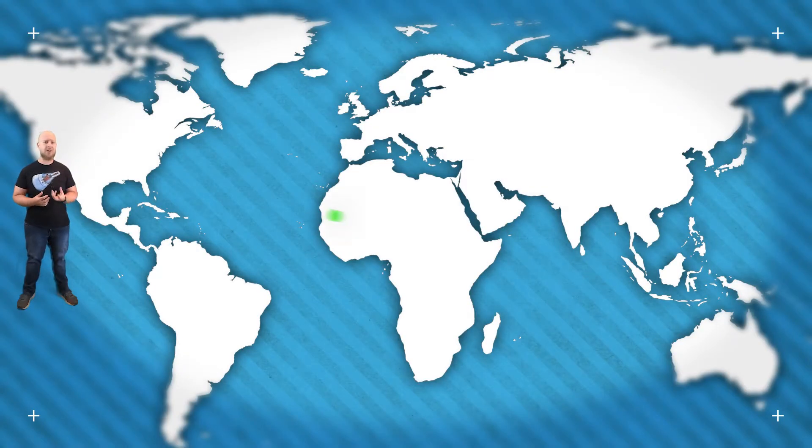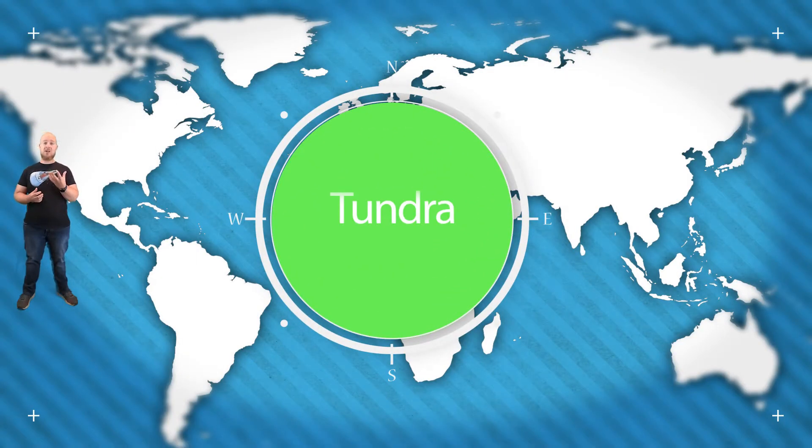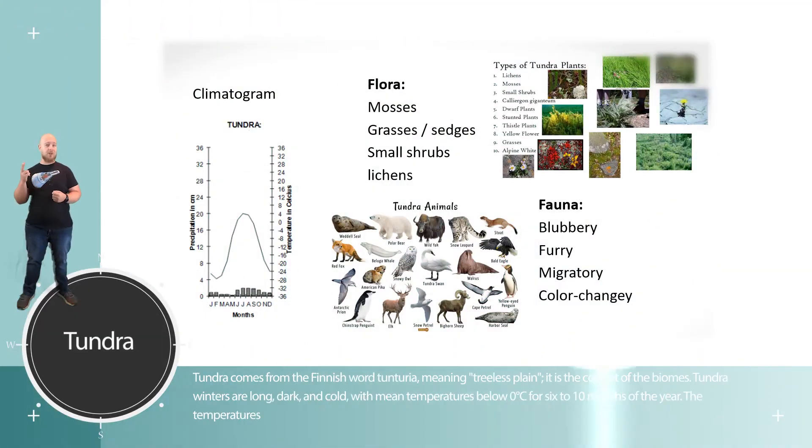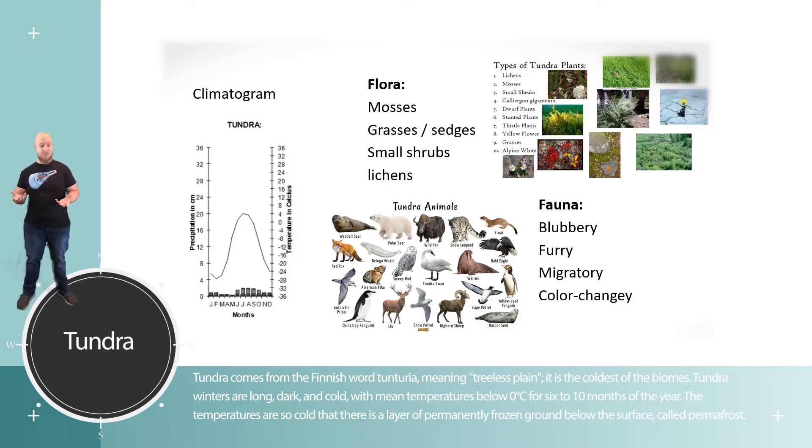This is the alpine tundra, because this ecosystem exists here because of its elevation, not so much its latitude. Here at Mount Hood in Oregon, even though I'm recording in the middle of July, there is snow. The tundra is the coldest biome, below freezing for most of the year — another ecosystem where you essentially have two seasons: inhospitably frozen and slightly more hospitably but still mostly frozen.